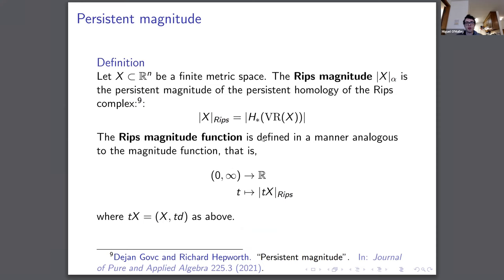The definition from Goetz and Hepworth uses the Rips complex, giving the Rips magnitude — the persistent magnitude of the persistent homology of the Rips complex. We take the alternating sum over the barcode retrieved from the Rips complex. The Rips magnitude function is defined analogously by scaling the space by some factor T, which gives different Rips magnitudes in the same way we get different regular magnitudes.